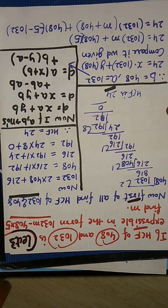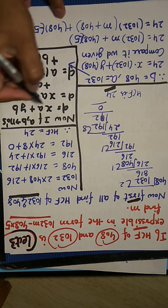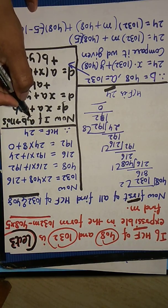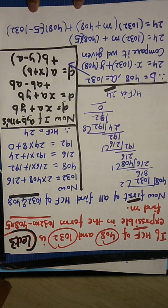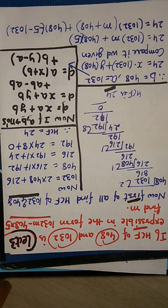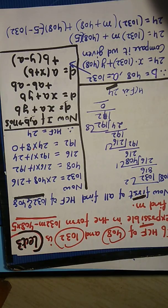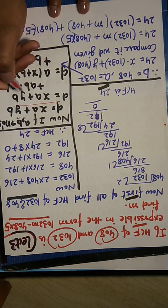If you denote the HCF with D, A and B are your numbers. Which numbers? How much is the value of A? 1032. How much is the value of B? 408. So you can write the HCF. D equals to XA plus YB. D equals to XA plus YB, A and B.